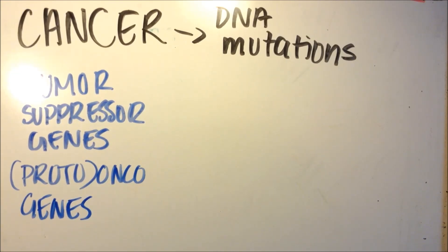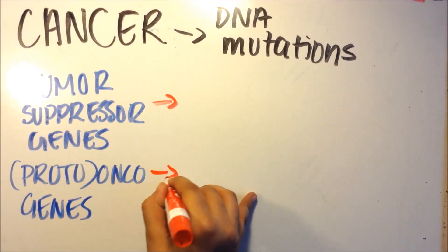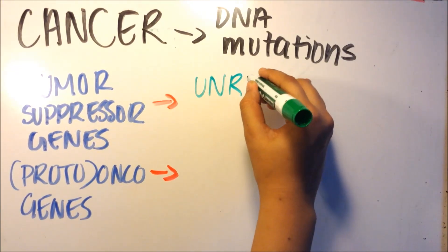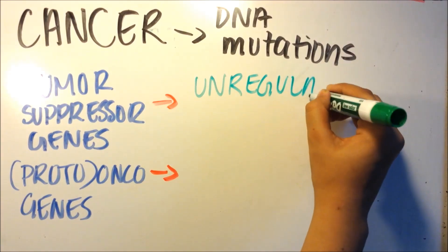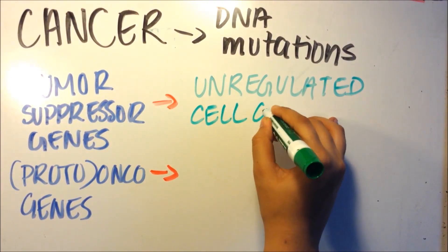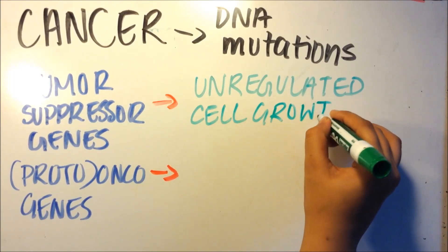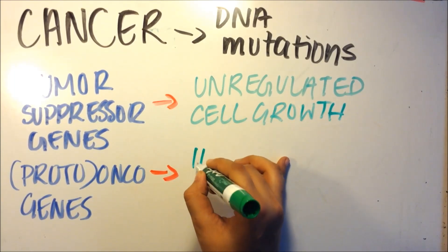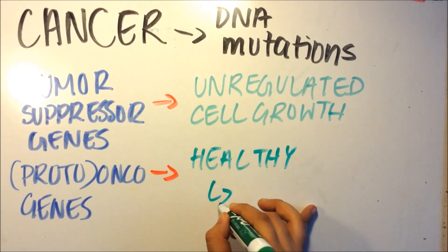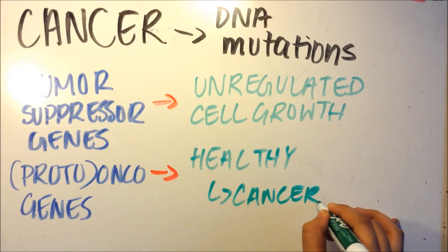Tumor suppressor genes - when there's a mutation in a tumor suppressor gene, there's going to be unregulated cell growth, and that's going to cause unregulated cell division. But proto-oncogenes are healthy genes which, when they have a mutation, activate oncogenes which become cancers. This causes the cell to become cancerous as well.